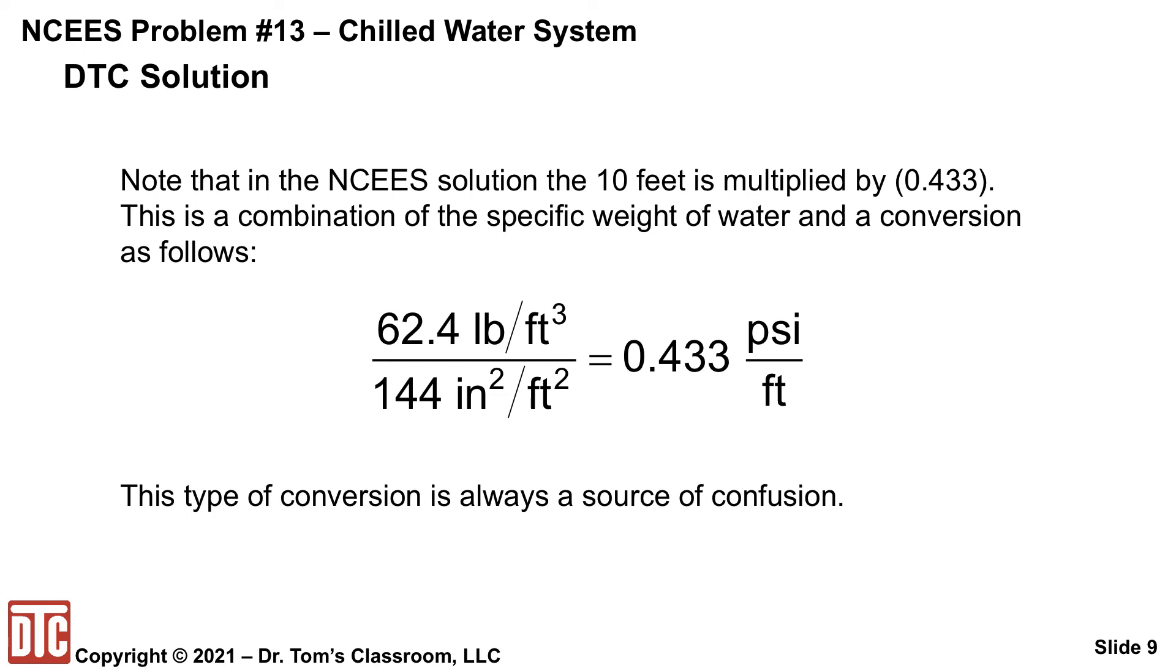Well, again, it's just this combining what I say is two basic conversions and I've always said that will always cause a problem with participants. So that's where that comes from. So that's where they multiply by 10 and get the 4.33.